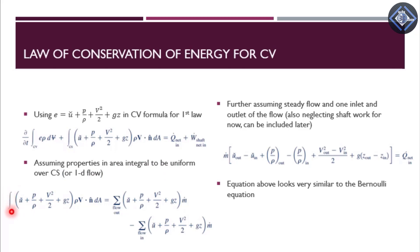Assuming properties to be uniform or flow to be one-dimensional, we can change the integral to a summation over all outflows and inflows. All outflows are taken as positive and all inflows as negative. We drop the summations and assume flow from a single inlet and outlet; later we can add more inlets and outlets. We further assume steady flow with one inlet and outlet, and neglect shaft work for now.